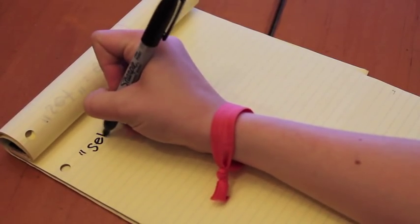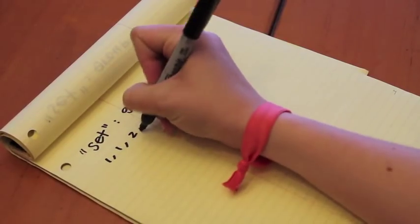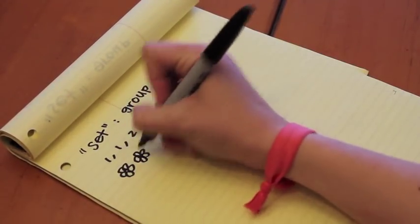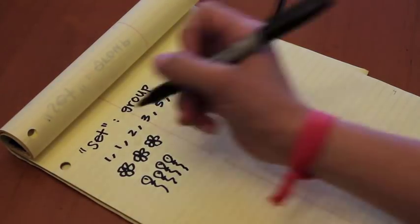To begin, we need to start with something called sets. Mathematicians use the word set as a fancy way to mean a group. They use the word group for something else, so let's not get into that. You can have a set of numbers, a set of flowers, a set of balloons, a set of anything. Sets are denoted using curly brackets, like this.